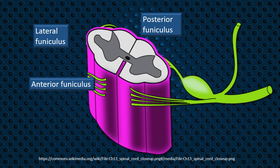This starter slide shows a cross section of the spinal cord, with a division into an internal gray matter and surrounding white matter. The three funiculi — namely anterior, posterior, and lateral funiculi — are highlighted. Today we will go into the details of the posterior funiculus.